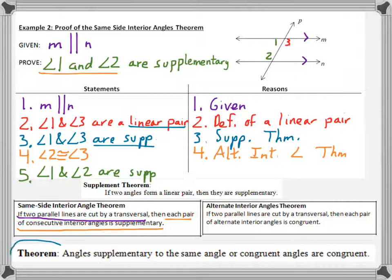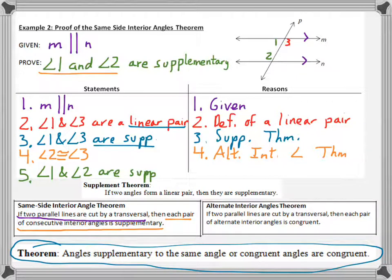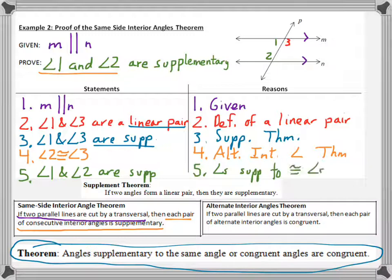The reason is the theorem we have at the bottom. Because there's no specific name for it, we'll write it out: angles supplementary to congruent angles are congruent.